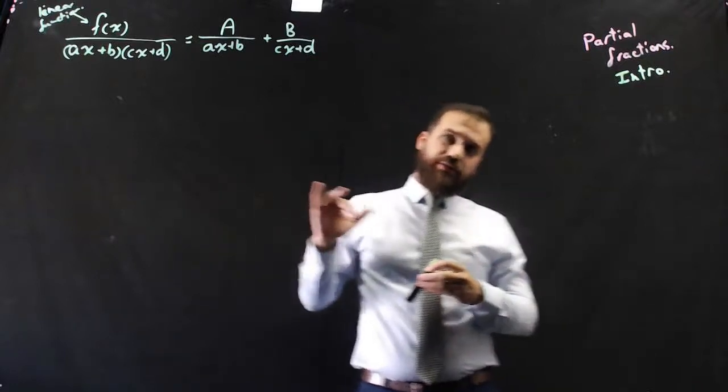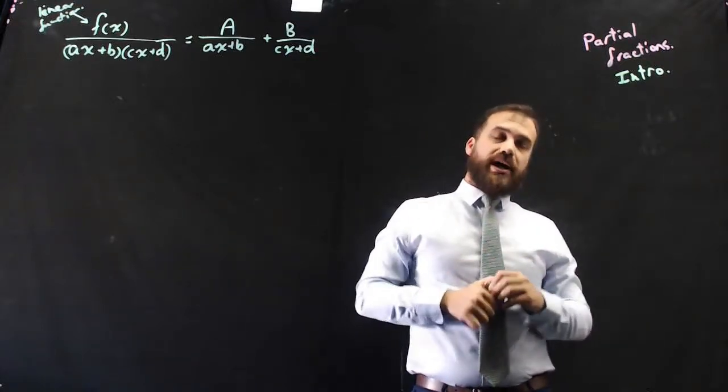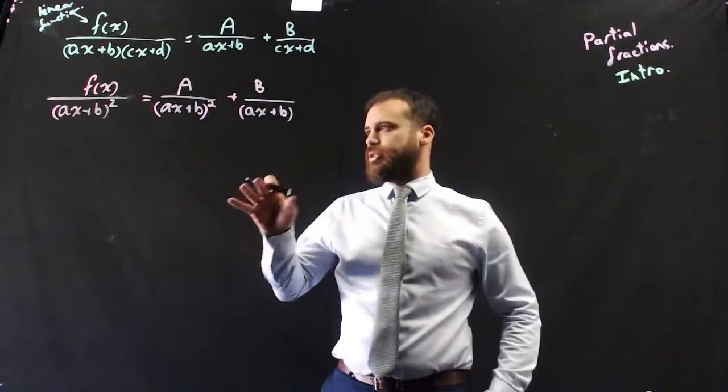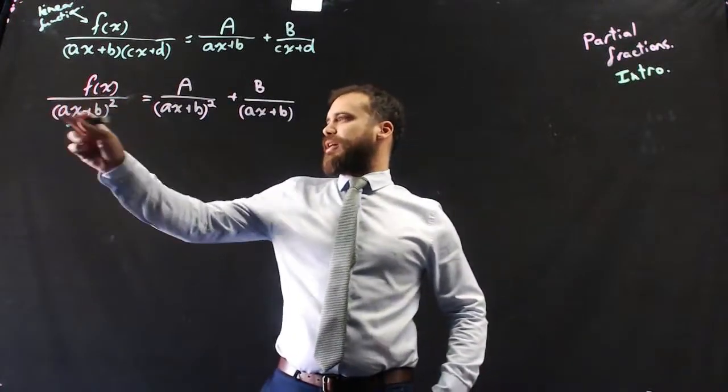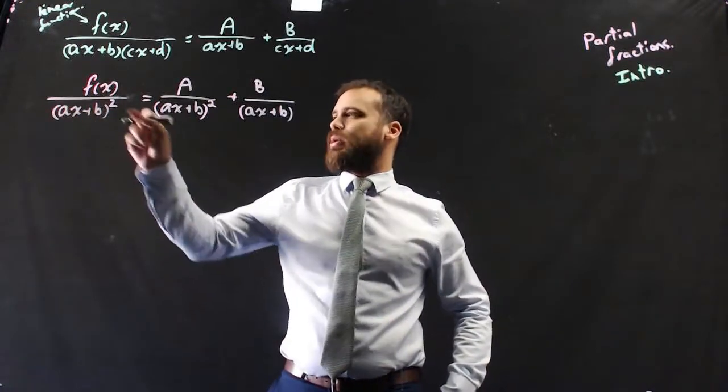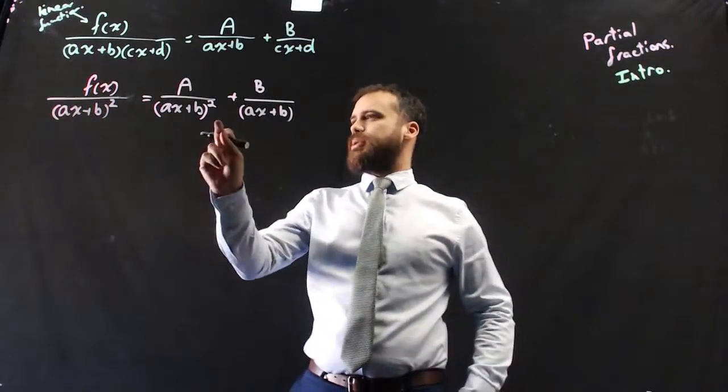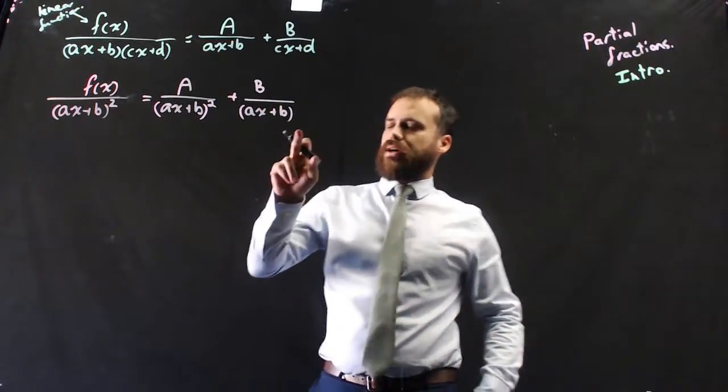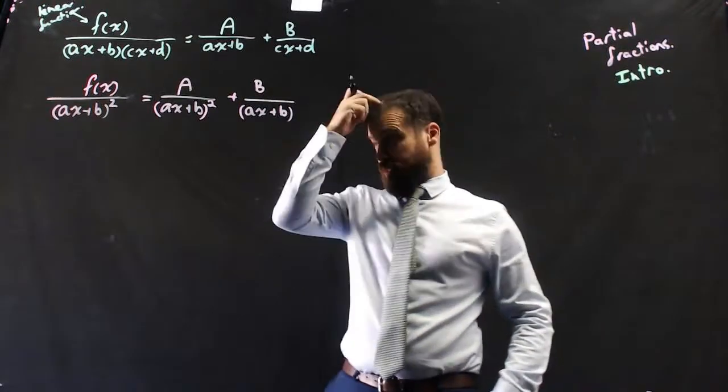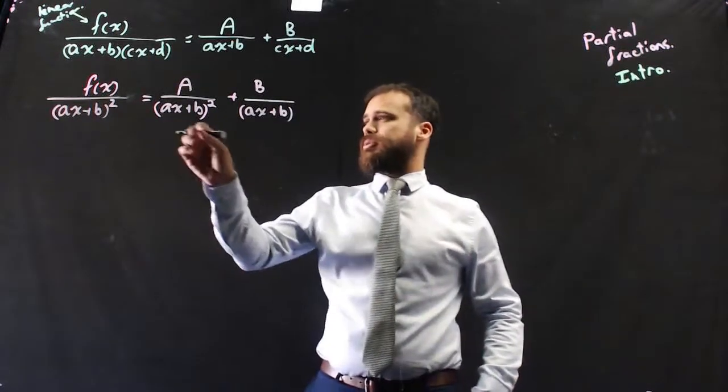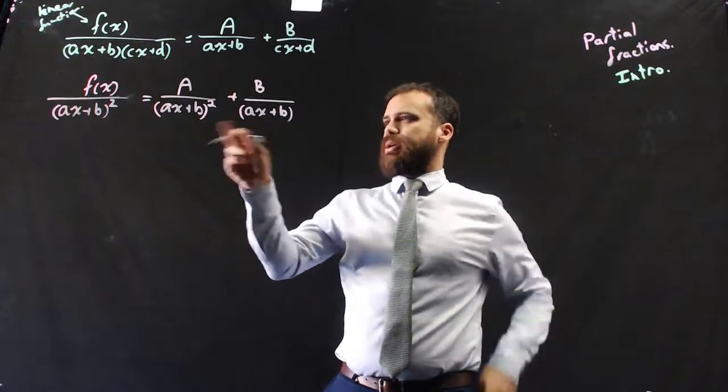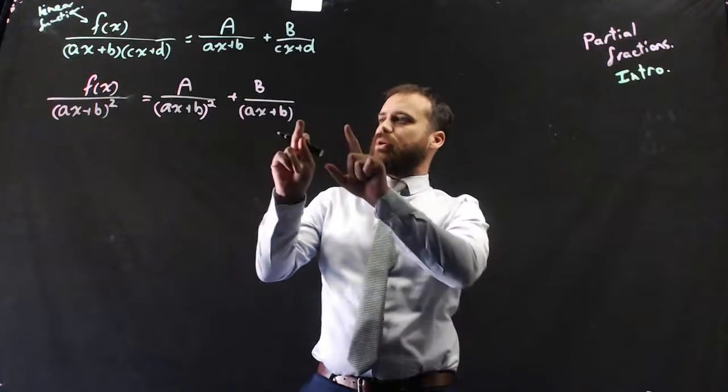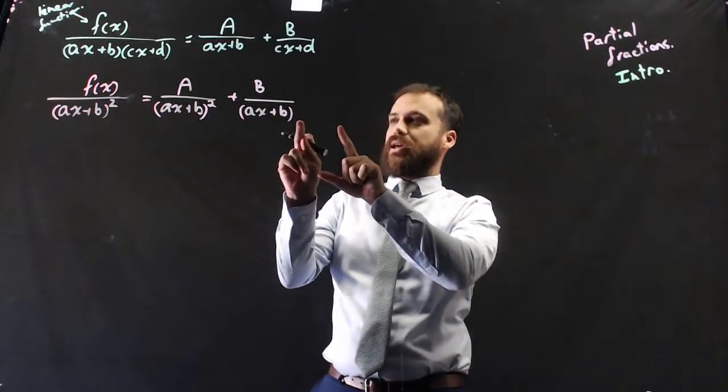Now, there is another related partial fraction that we can break up. So here's our other partial fraction transformation, I guess you could call it. f(x) over (ax + b)² equals A over (ax + b)² plus B over ax + b. Now, you might be looking at that and thinking, that's not going to work. You're going to end up with (ax + b)², ax + b, (ax + b)³. But you can still add these two together, just by multiplying this one by ax + b.